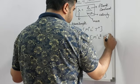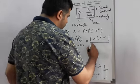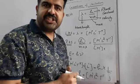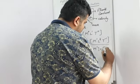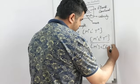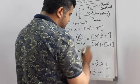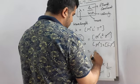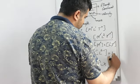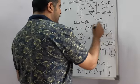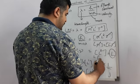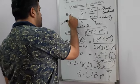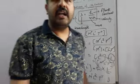So the dimensional formula of h is M¹L²T⁻¹. Now putting all values on the right hand side: h is M¹L²T⁻¹, m is M¹, and velocity v is distance upon time giving L¹T⁻¹. Combining these gives M⁰L¹T⁰. The left hand side dimensional formula is M⁰L¹T⁰ and the right hand side is also M⁰L¹T⁰. So LHS equals RHS, hence this formula is dimensionally correct.